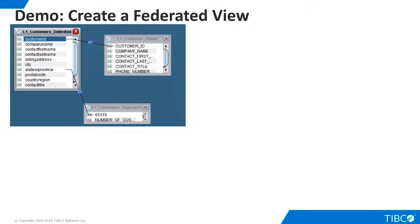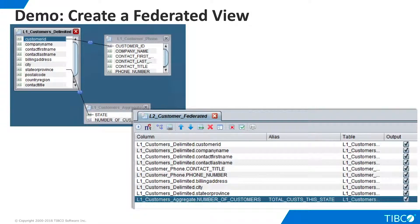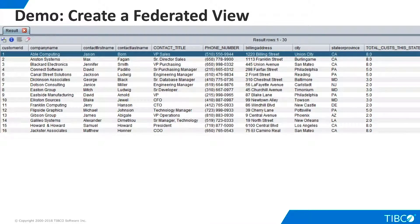Finally, let's create a federated view that joins data from the delimited file and both subsets of data on the Fancy tab of the Excel spreadsheet. We start with the delimited file and join it to the spreadsheet phone information based on customer ID. We also join the delimited data with the aggregate data on the spreadsheet, based on the state or province column. We use the grid panel to define a subset of columns for the projection, and we provide an alias for the column that shows the number of customers in the state. We execute the view, and TDV joins the data from our flat file sources.